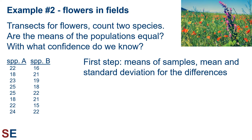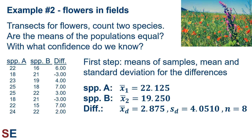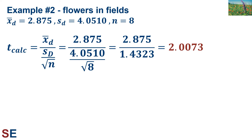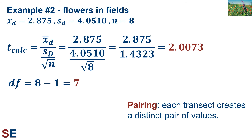For our second example, we ask whether two flower species differ in their abundances across a large area. We create randomly placed transects as sub-regions and count the number of plants of each species in them. The differences for our eight transects are calculated, with each difference value depending on two original values. The means for the species are 22.125 for species A and 19.250 for species B. For the differences, the mean is 2.875 with a standard deviation of 4.0510 based on eight differences. The pairing is justified because each transect creates a distinct pair of values — one per species — specific to that transect only.